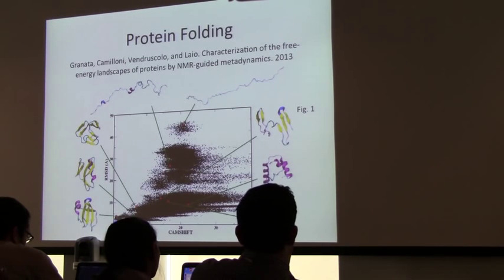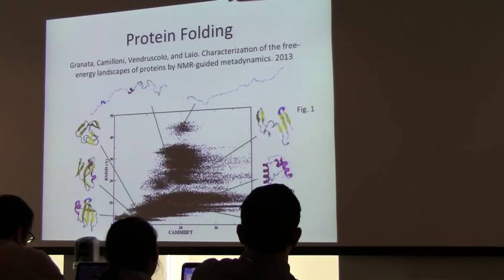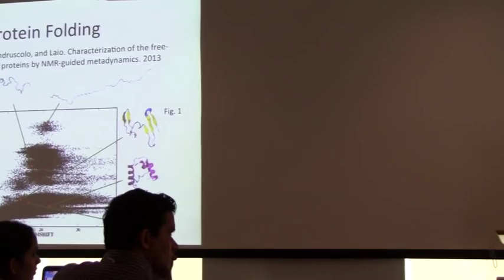Are there questions about how you might apply this to a particular model, or what could be a collective variable? One question: is it typical to run multiple metadynamics runs with different starting parameters? Say there are three collective variables that are important but you only pick two — that's a plane in three-dimensional space, so if you change the variable you're not looking at, you might get a totally different landscape.